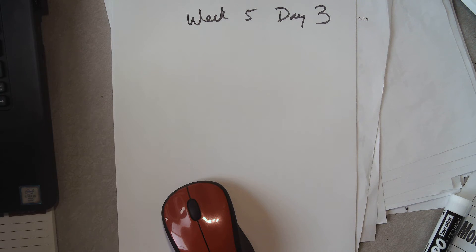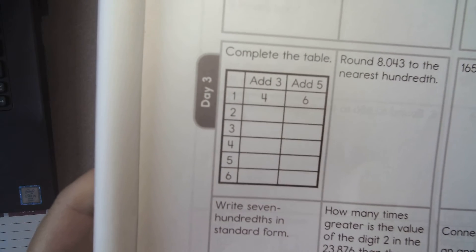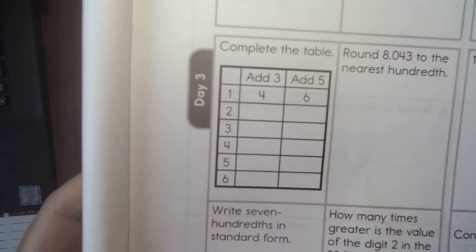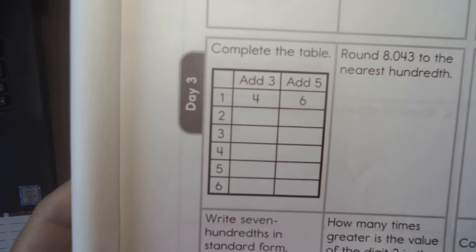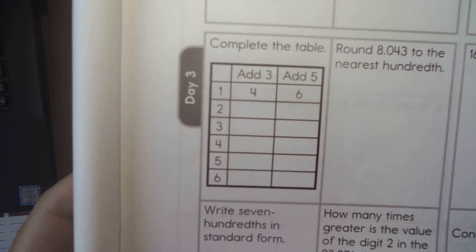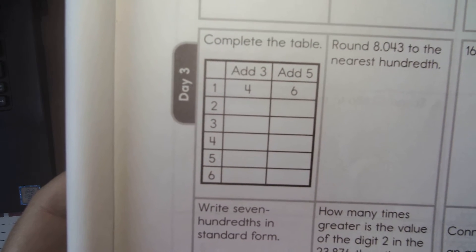Week 5, day 3. Complete the table. So we're adding, I'm going to put this up here, we're adding 3 and adding 5. So as we go down the add 3 column, it goes 4, then 5, 6, 7, 8, and 9.